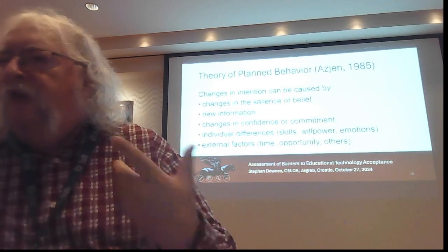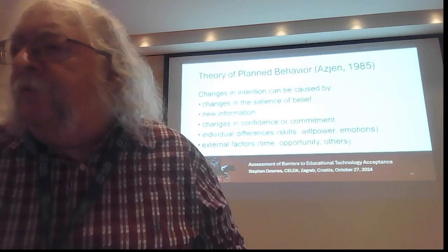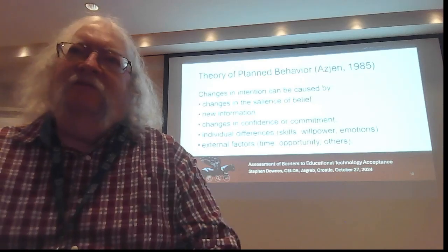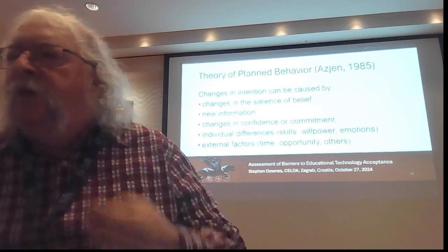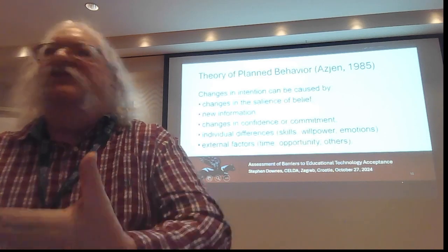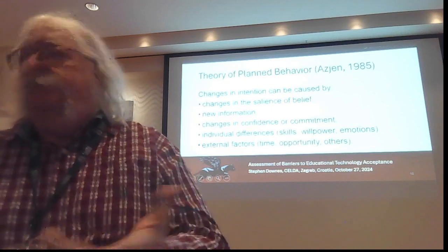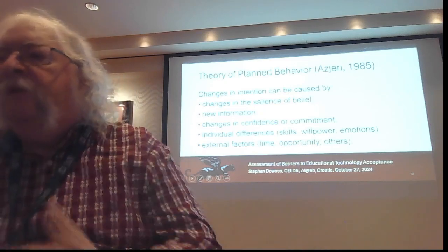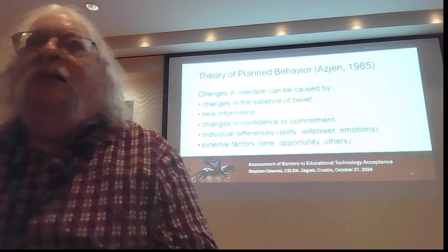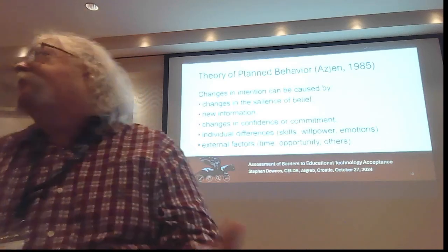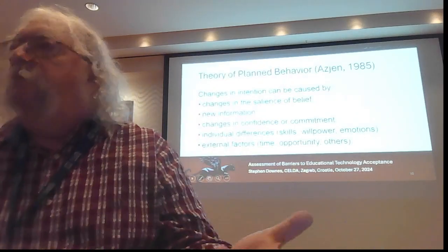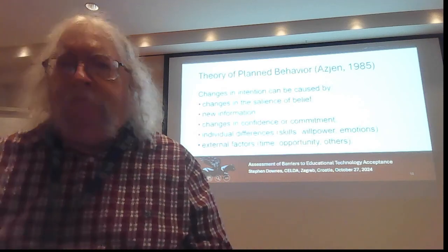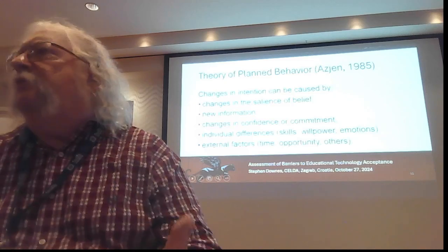Similarly, we have Ajzen's theory of planned behavior, only about 40 years ago. It considers causes of changes of intention — very folk psychological — including changes in the salience or relevance of belief, new information, changes in confidence or commitment, personal development factors, individual skills, emotions, and external factors such as time, opportunity, and the influence of others. This is a very individual-centered, psychologically-centered approach. Does it explain technology adoption or diffusion? No, it does not.